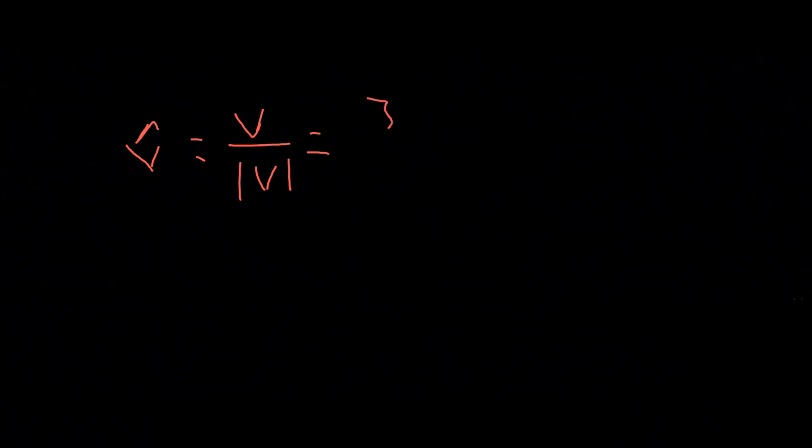The unit vector formula is: V hat is equal to V divided by the norm of V. We apply the formula and compute. The denominator is the magnitude of the vector, and we divide each component. The result gives us the third component minus 5 is 0.